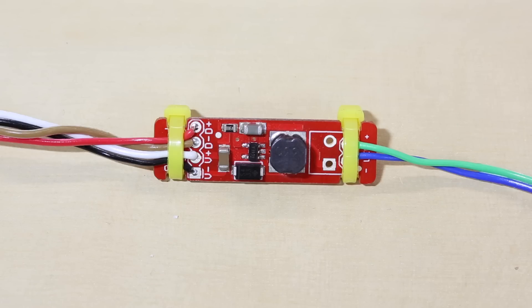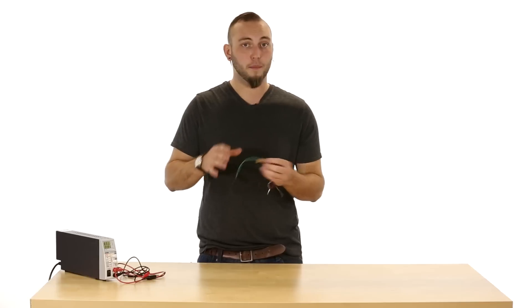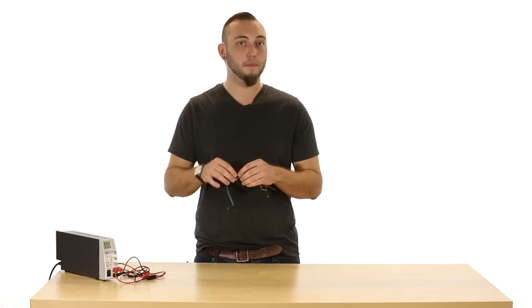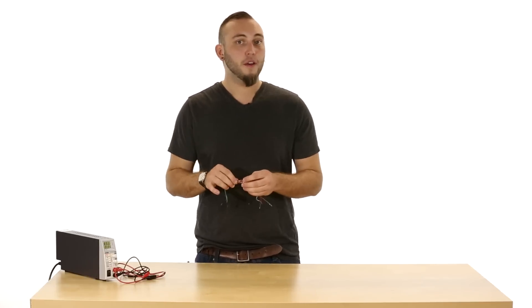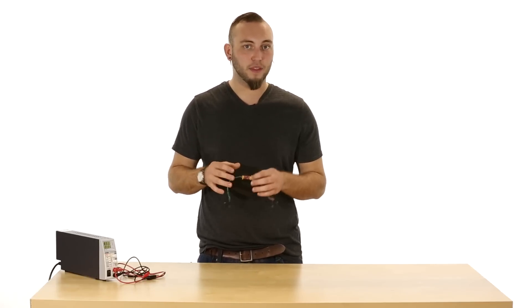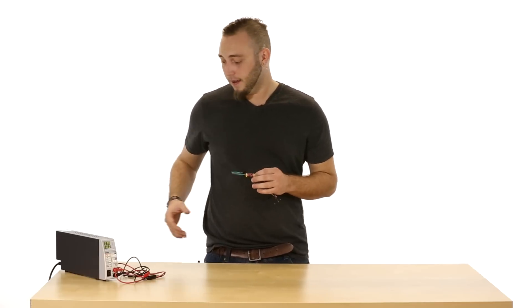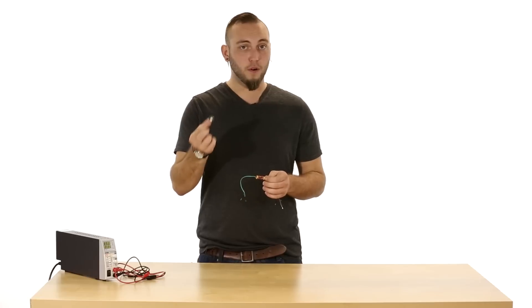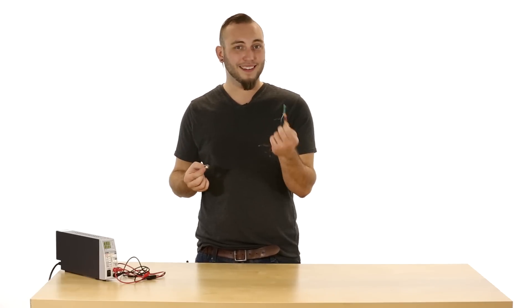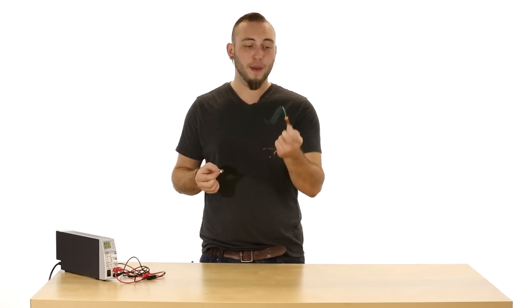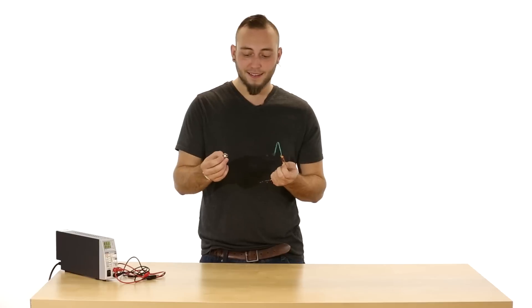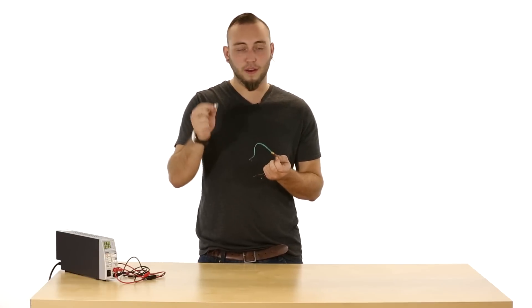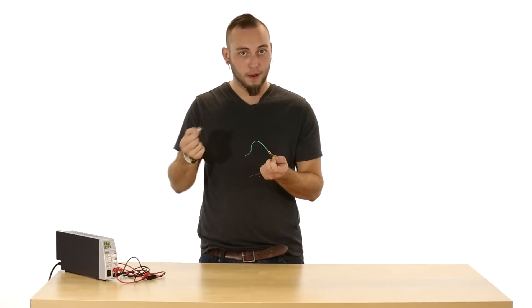The reason it's called the FemtoBuck is because it's a buck converter as opposed to a boost converter. A boost converter is a step up and a buck converter is a step down. So that means you actually have to supply this with a few more volts than the forward voltage of your LEDs. These three watt LEDs for instance run at about 3.4 volts and you need to give this device at least seven volts. But no matter what the voltage does coming into this, this will only get the right amount of current so you don't have to worry about your LEDs burning out.